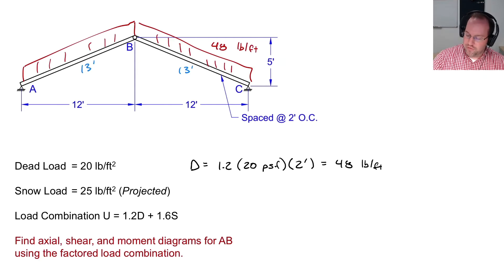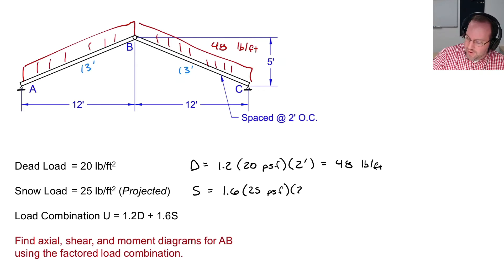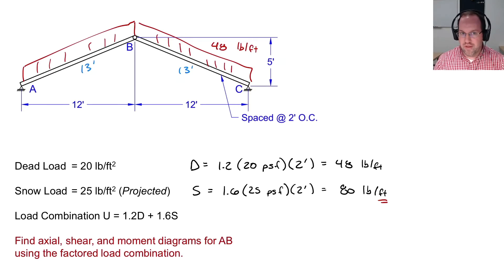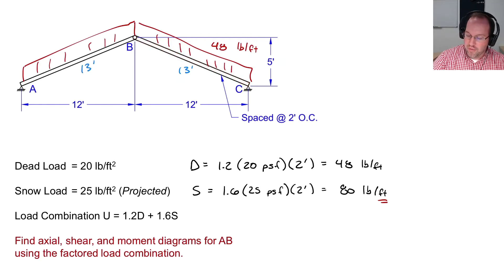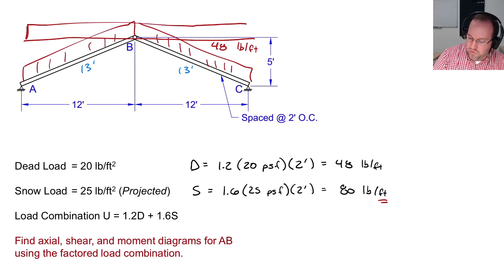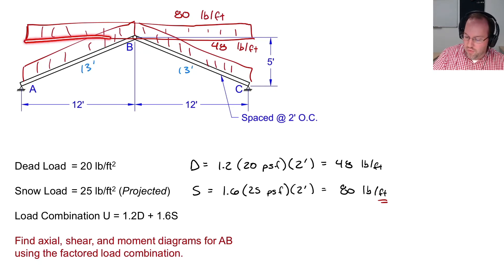Contrasting with the snow load: 1.6 times 25 pounds per square foot times the two-foot width gives 80 pounds per foot. However, here 'per foot' means a foot in the horizontal plane, not a foot along the rafter length. So I draw the horizontal projection plane and apply the snow load along it at 80 pounds per foot — projected over that horizontal plane, unlike the dead load which follows the roof slope.